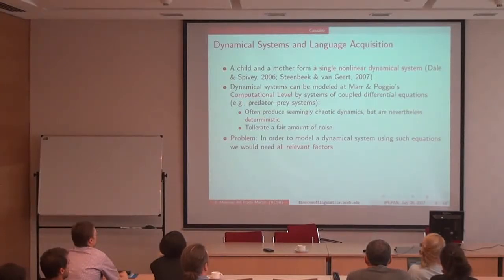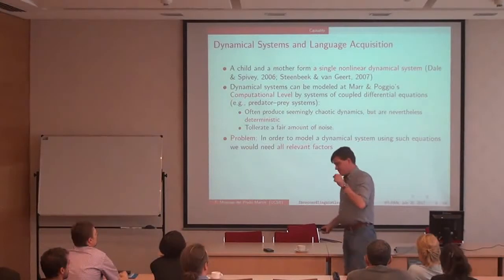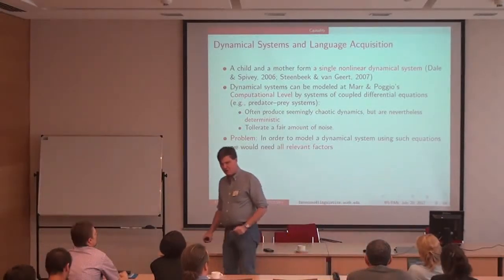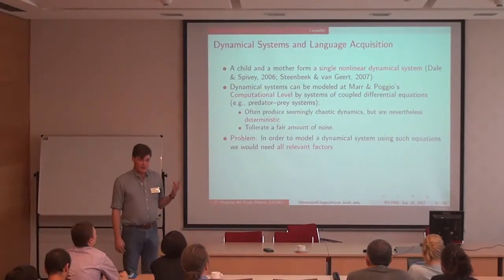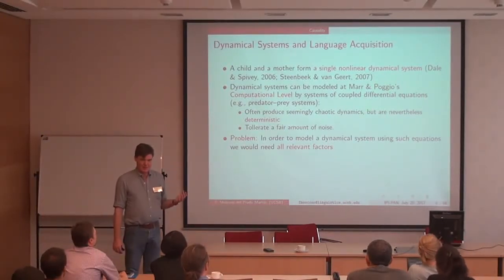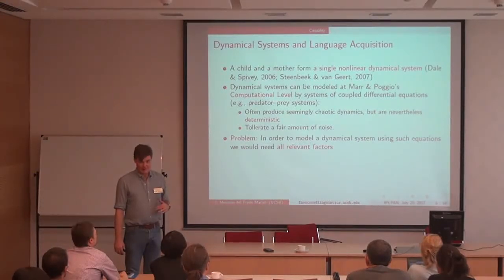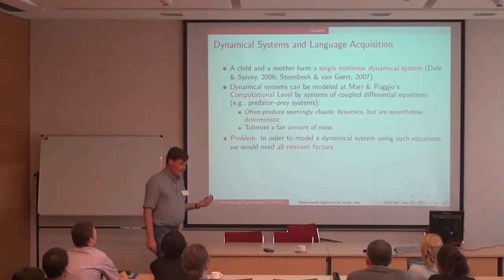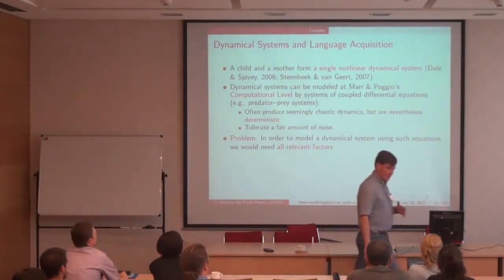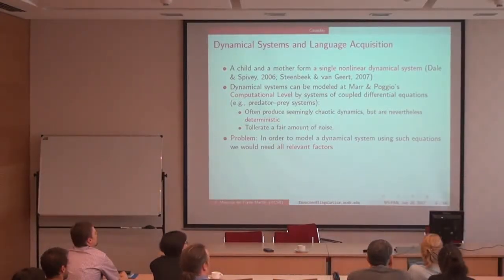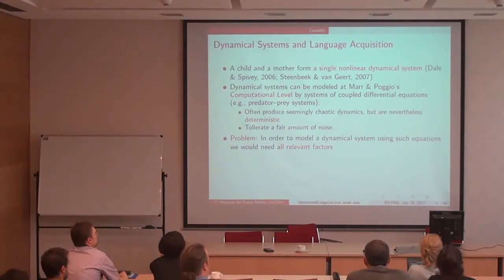The problem is that if you really want to write non-linear differential equations to model the development of the system, ideally you'd want every single relevant variable. There's a few things that might matter in a child's language development — there's no way we're ever going to get close to all of them. But I was really shocked when I found out about Takens' theorem, which is literally the closest thing to black magic I've ever seen.